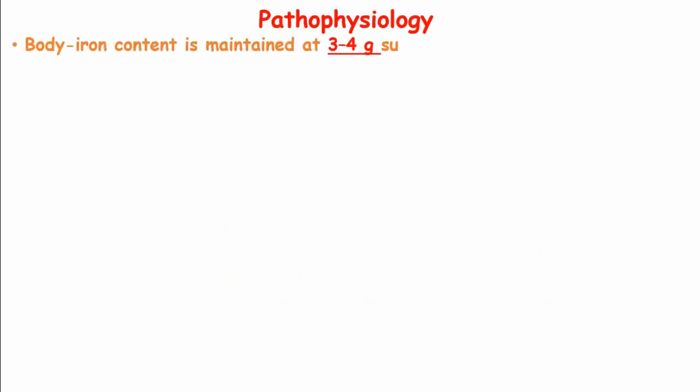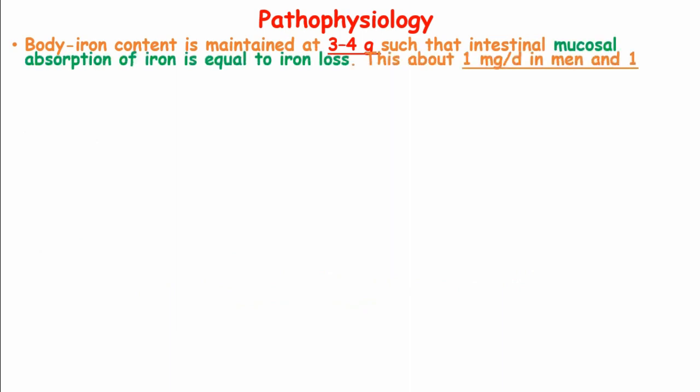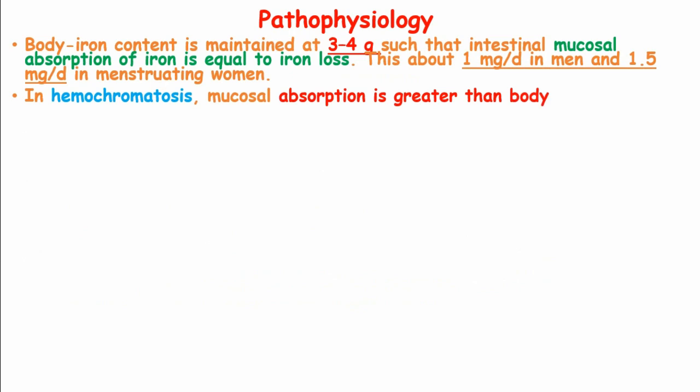In the basic physiology, body iron content is generally maintained at 3 to 4 grams such that intestinal mucosal absorption of iron is equal to iron loss. This is about 1 mg per day in males and 1.5 mg in menstruating women. In hemochromatosis, mucosal absorption is greater than body requirements, and amounts up to 4 mg per day or more are absorbed.